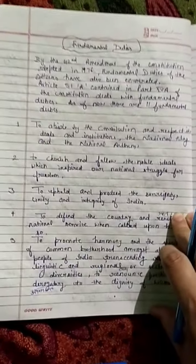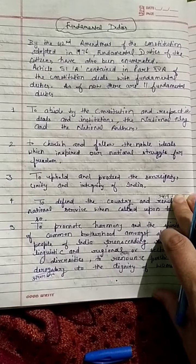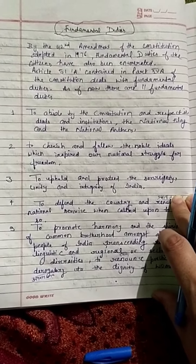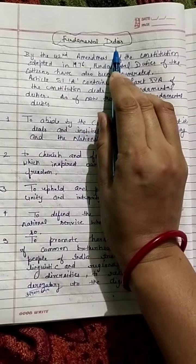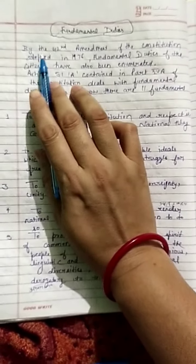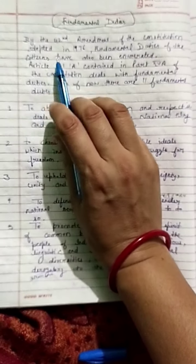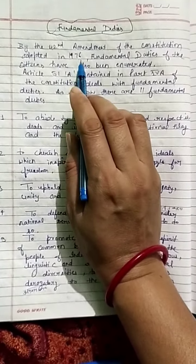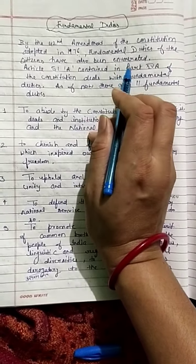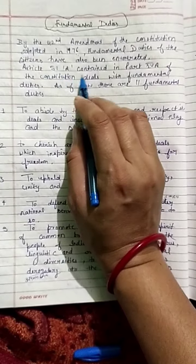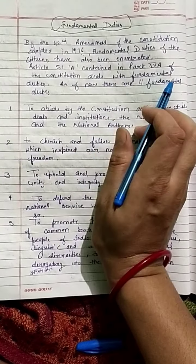Good morning students, myself Anisha. Yesterday we discussed fundamental rights and now we are starting our next topic: Fundamental Duties. By the 42nd Amendment of the Constitution adopted in 1976, fundamental duties of citizens have also been enumerated. Article 51A, contained in Part 4A of the Constitution, deals with fundamental duties.